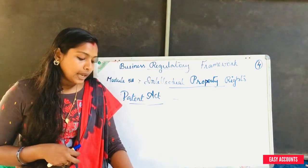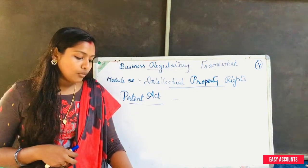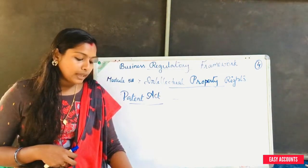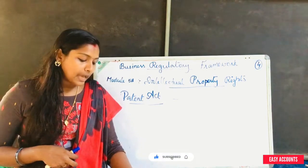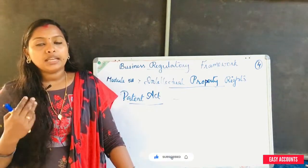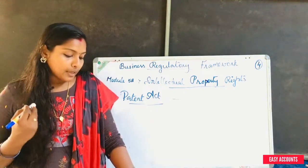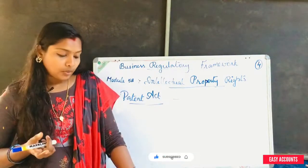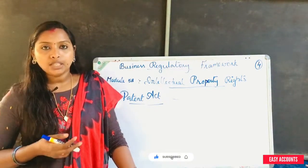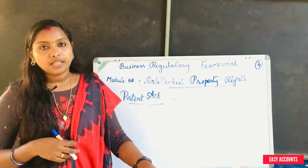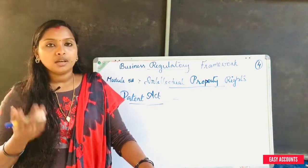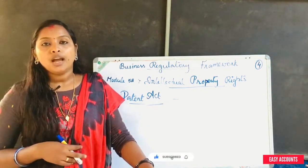The court can grant relief in case of groundless threat of infringement, including an injunction and damages. In a suit for infringement of patent, the court may grant an injunction and seizure of goods, and either damages or an account of profit. We will apply to the trademark in the next video. This is our first video.